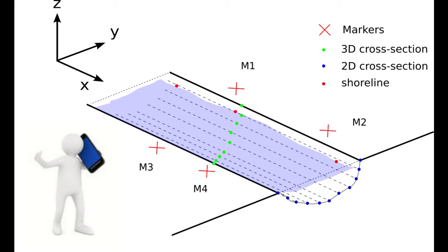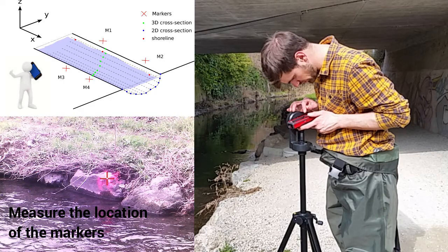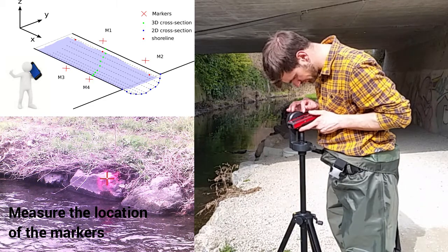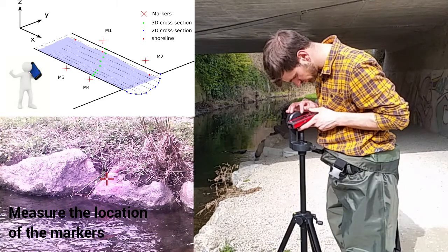Here, we want to define the x-axis parallel to the river, with the direction pointing in the same direction as the vector formed from M1 to M2. To do so, we shoot at the locations of the markers M1 and M2. Here, these are located more or less parallel to the shoreline of the far shore.